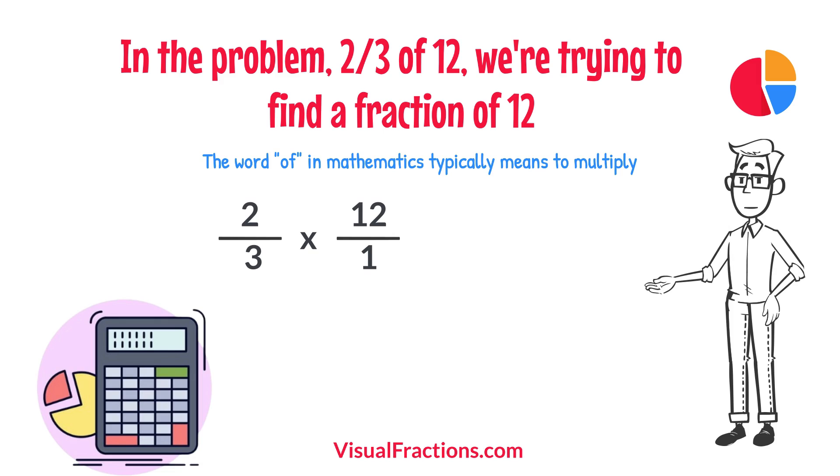Now, we proceed to multiply across. First, multiply the numerators, 2 times 12 equals 24.